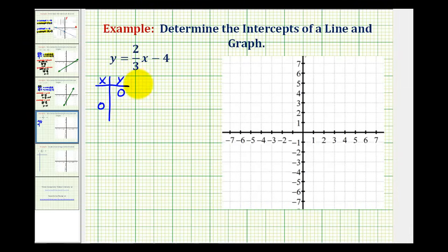So again, if we set y equal to zero, this is going to give us the x intercept, where we know the y coordinate has to be zero. And then, for the y intercept, we're going to set x equal to zero and solve for y to determine the y intercept.